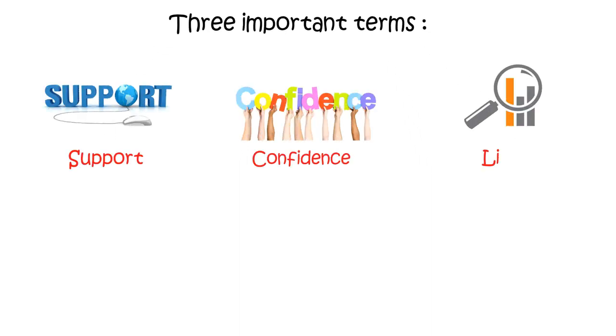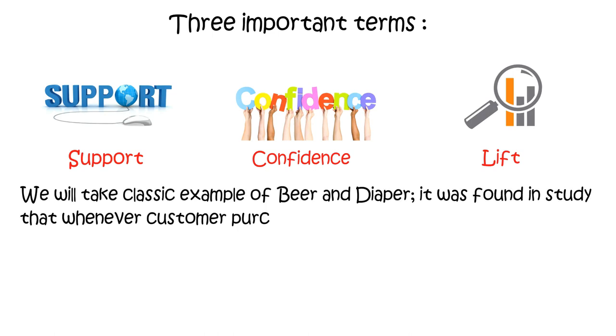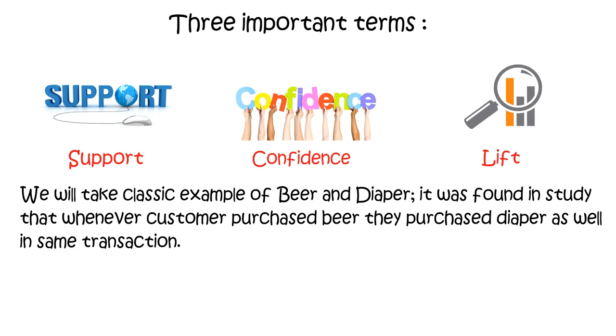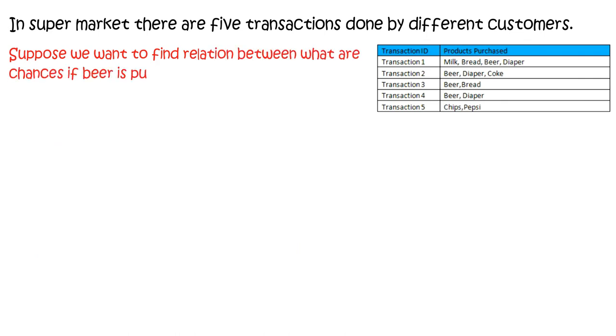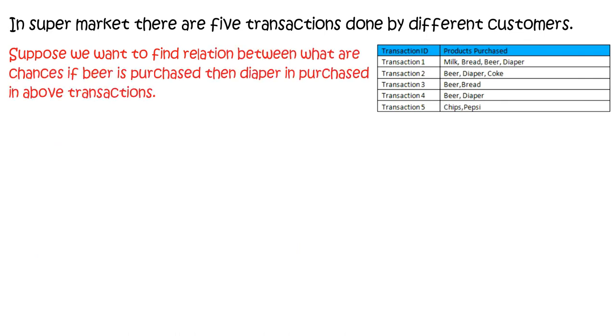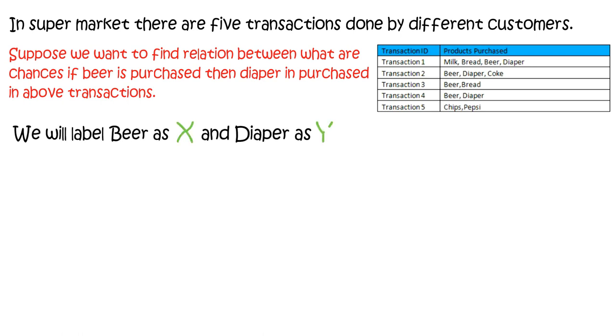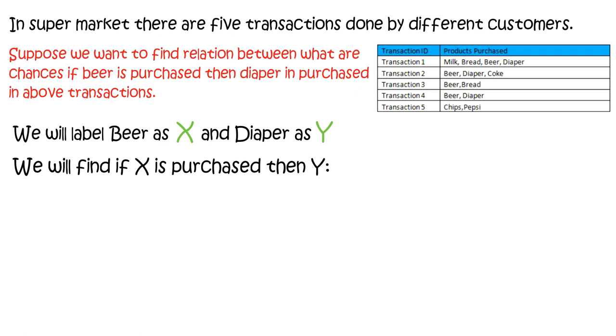In this analysis there are three important terms: support, confidence, and lift. We will take the classic example of beer and diaper. It was found in a study that whenever a customer purchased beer, they purchased a diaper as well in the same transaction. In a supermarket there are five transactions done by different customers. We want to find the relation — what are the chances that if beer is purchased, then diaper is also purchased? We label beer as X and diaper as Y, so we find: if X is purchased then Y is also purchased, which means X implies Y.